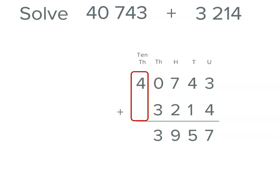Now we come to tens of thousands. And you'll see we've only got four. And there's nothing written on our other number. You could write a zero there if you wanted to. It doesn't change the value of the number at all. And it might help you. But you don't have to do that. So we've actually got four in our tens of thousands place. So we've got a total of 43,957.